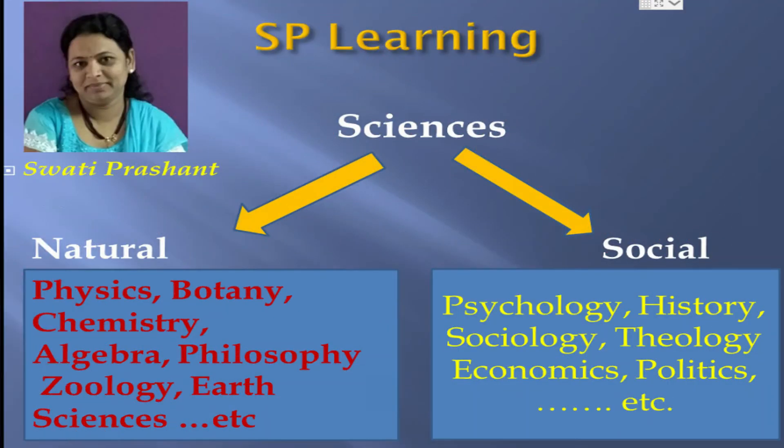Science is the systematic body of knowledge. It is an intellectual and practical activity through the systematic body. There are two major types of sciences. First is natural science and second is social science. Natural science studies natural objects like physics, chemistry, biology, botany, zoology, earth science, astronomy, etc.